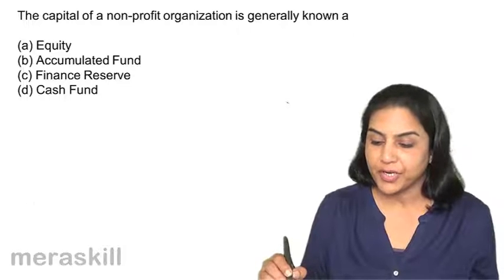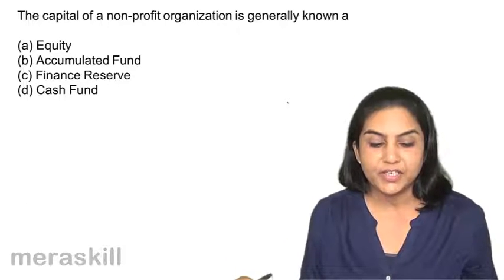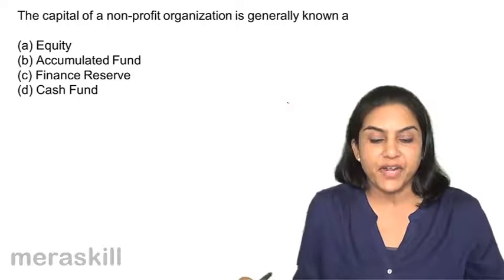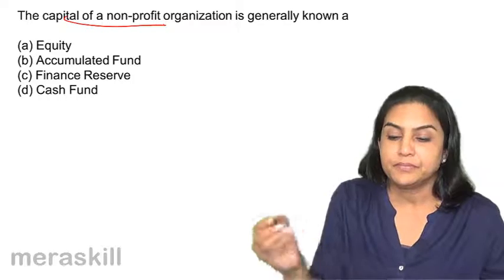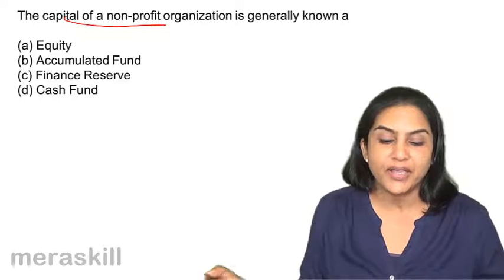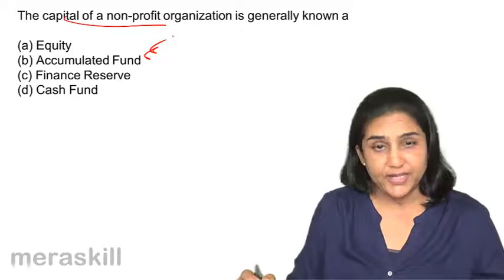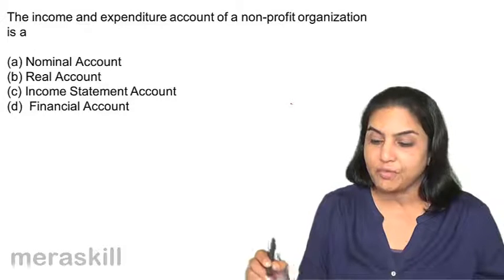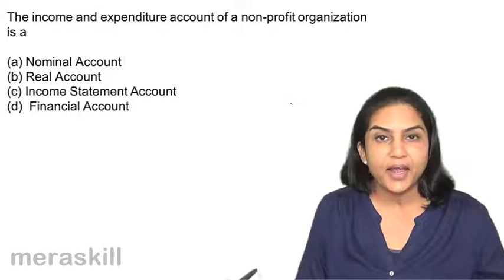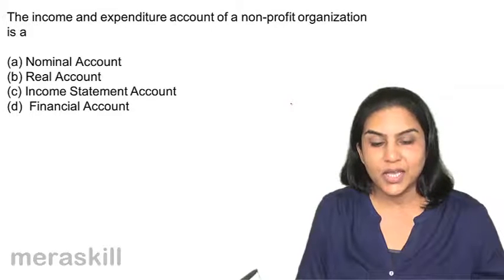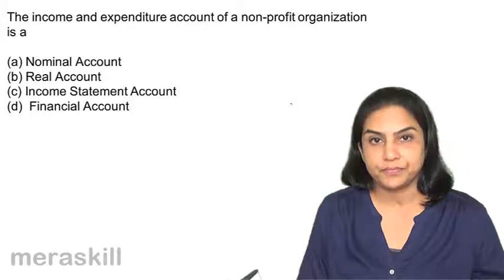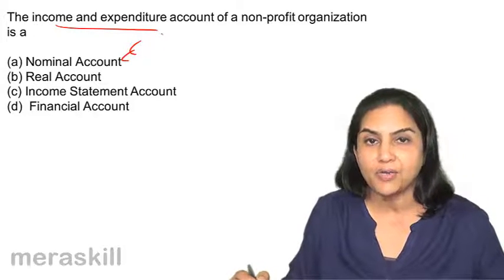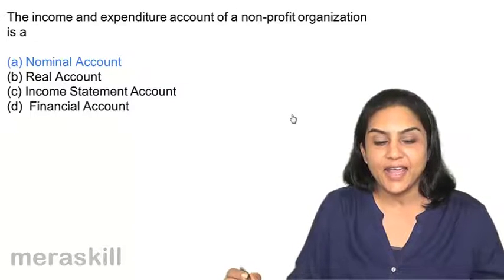The capital of a non-profit organization is generally known as: A. Equity, B. Accumulated fund, C. Finance reserve, D. Cash fund. We don't have capital as such in a non-profit organization — it is called accumulated fund. Correct answer is B. The income and expenditure account of a non-profit organization is: A. Nominal account, B. Real account, C. Income statement account, D. Financial account. The income and expenditure account is a nominal account — it has revenues and expenses. Correct answer is A.